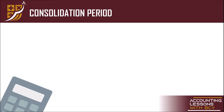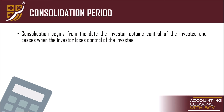Kailan ba dapat tayo magsimula mag-consolidate? Consolidation will begin from the date the investor obtains control of the investee. Ang day one ng consolidation period natin ay yung date of acquisition of control, at ito ay magtatapos pag nawalan ng control si investor. Sa paano tayo nagkakaroon ng control? If we acquire more than 50% ownership on voting stocks. Kapag bumaba sa 51% ang ownership percentage natin, deconsolidation na yan — ito ay ibibigay sa isang separate lecture video.